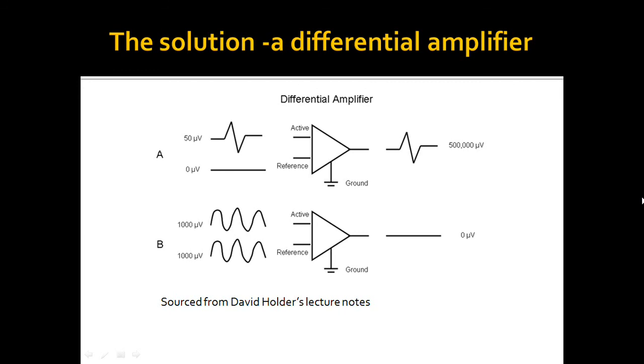As suggested by its name, a differential amplifier more specifically amplifies the differences between potentials. Neatly illustrated here by David Holder's diagram, we can see how a signal with a difference from a reference electrode of 50 microvolts is amplified to 500,000 microvolts. The two signals which are the same are left unamplified. This is pretty much the essence of differential amplification.